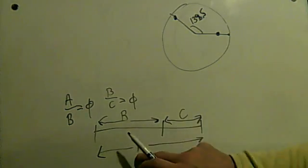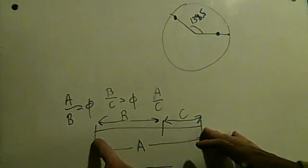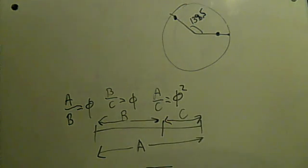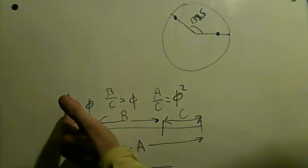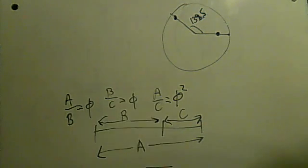It turns out that the ratio of A to C, that is the entire to the smaller, is the ratio squared. That's what you get if you multiply these two together. The B's cancel out, you get A over C. That's the ratio squared.